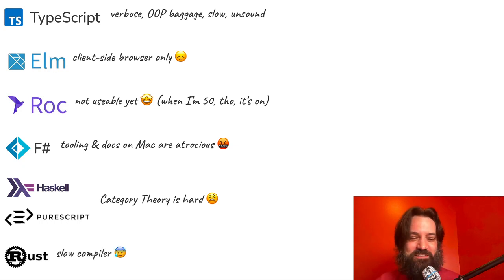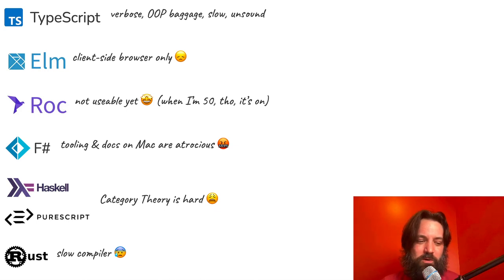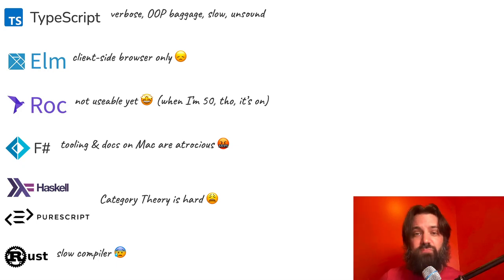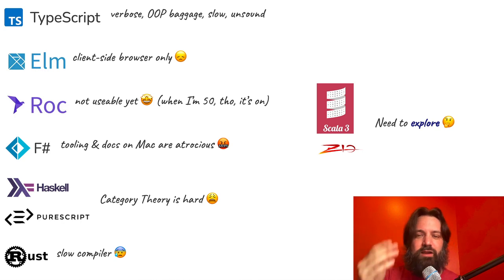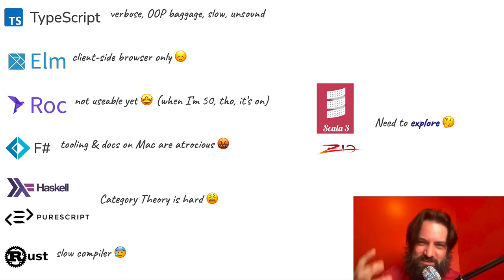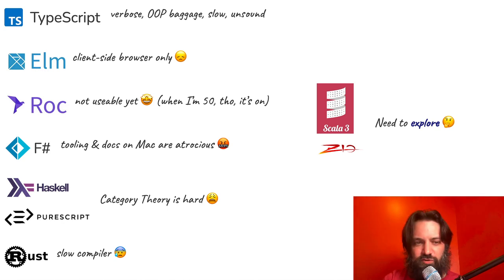Rust pretty much has everything you're looking for with epic speed — it can compete with C++ and Go — but the compiler is notoriously slow. There's something to be said about Python and JavaScript dynamic languages for quickly discovering your domain. That's another knock against Haskell too — slow GHC compilation. I need to explore Scala 3 and Zio — I found ZioPy today, a Python port of Zio — and maybe I can get past my prejudice of Java and take a look at Scala 3.